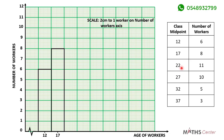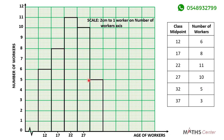The next bar has class midpoint 22 and frequency 11, so the height is at 11 and the midpoint is at the center of the bar on the 5th division. The next bar has midpoint 27 and frequency 10, so the height is at 10 with midpoint 27 at the 5th division. The next bar has midpoint 32 and frequency 5, so the height is at 5 with midpoint 32 at the 5th division. The last bar has midpoint 37 and frequency 3, so the height is at 3 with midpoint 37 at the 5th division.